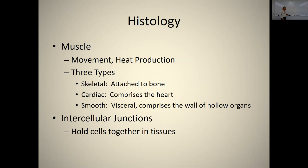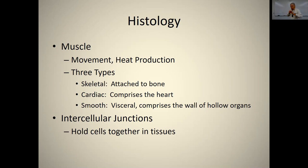Muscle tissue provides movement and heat production. Skeletal muscle is attached to bone, voluntary, and striated. Cardiac muscle comprises the heart — also striated but involuntary. Smooth (visceral) muscle comprises the walls of all other hollow organs, is not striated, and is also involuntary. We'll have a whole chapter on muscle, mostly covering skeletal muscle, with some on smooth, and a little on cardiac since we cover the heart next semester.